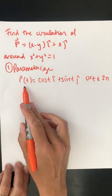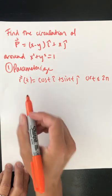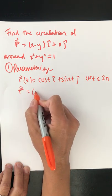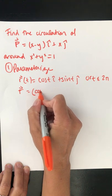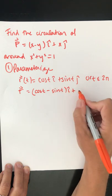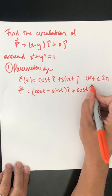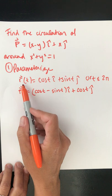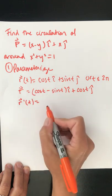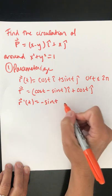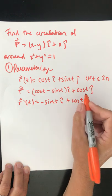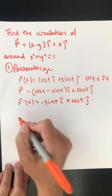Now I have r. Now I need f in terms of r. So f will be x minus y, so that is cosine t minus sine t i-hat plus x j-hat, so plus cosine t j-hat. And remember, we need to dot f and dr, so we need to find r prime of t, which is negative sine t i-hat plus cosine t j-hat.